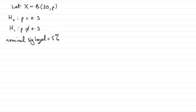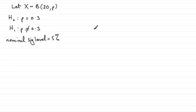Rather than the actual significance level, because we're going to be asked to work that out later in part B. We've also got to find the critical regions by carrying out a two-tailed test, where we look at the probabilities in each of the two tails to be as close as we can to two and a half percent — essentially cutting this in half.